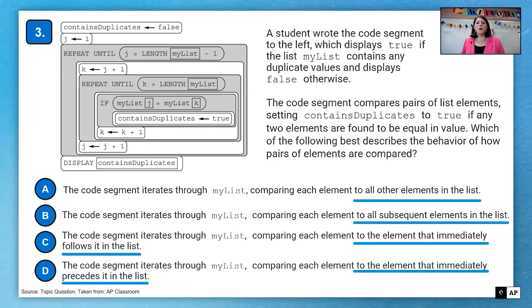So clearly, the code segment iterates through mylist. And so I've underlined the parts of the question or the answer choices which are different. So we are comparing each element to all other elements in the list. Are we comparing each element to all subsequent elements in the list or to just the element that immediately follows or to the element that immediately precedes? This K equals J plus 1 is really important here.